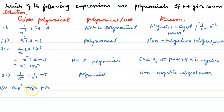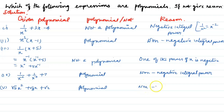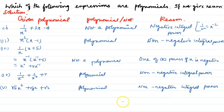Fifth question: √5 x² + √3 x + √2. This is a polynomial — it has non-negative integral powers.